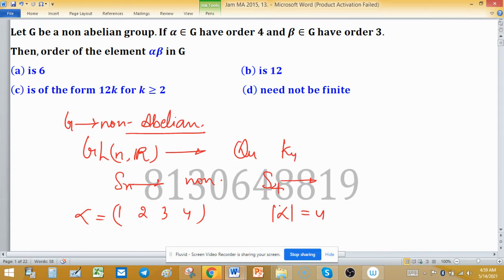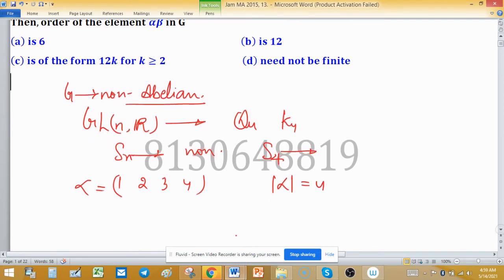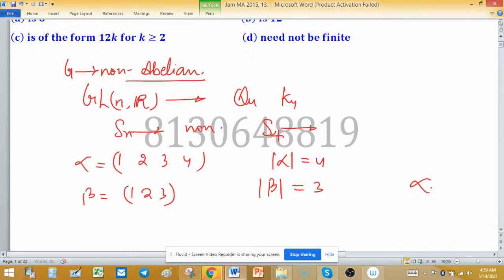This is written in disjoint cycle, so order of α is 4. Consider β is (1, 2, 3), and its order is 3. The given hypothesis is satisfied, and we have to find the order of αβ and predict the order of αβ.